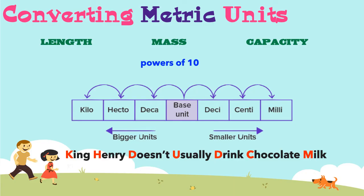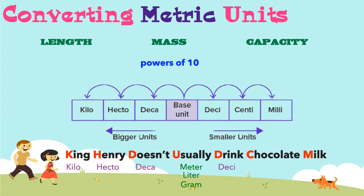This is the King Henry Doesn't Usually Drink Chocolate Milk method. King stands for kilo. Henry represents hecto. Doesn't represents deca. Usually represents our units — that could be the base unit: meter, liter, or gram. Drink represents deci. Chocolate represents centi. And milk represents milli.